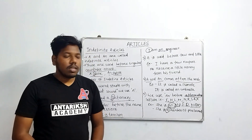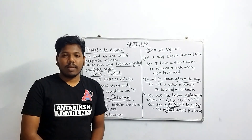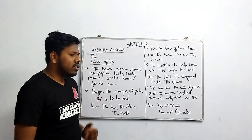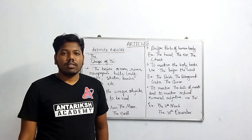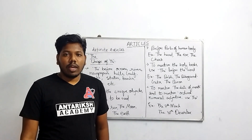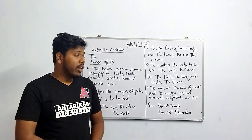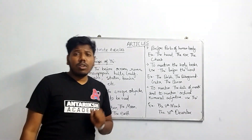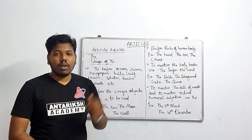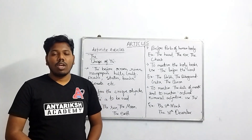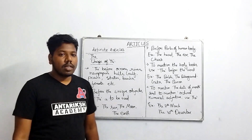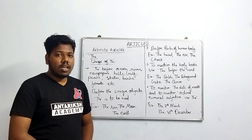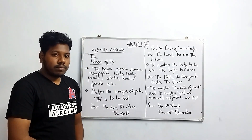This is all about indefinite articles. Next we will read about definite articles, which is 'the'. The first use of 'the' is that it is used before oceans, rivers, forests, newspapers, hills, gulfs, peaks, and river banks.